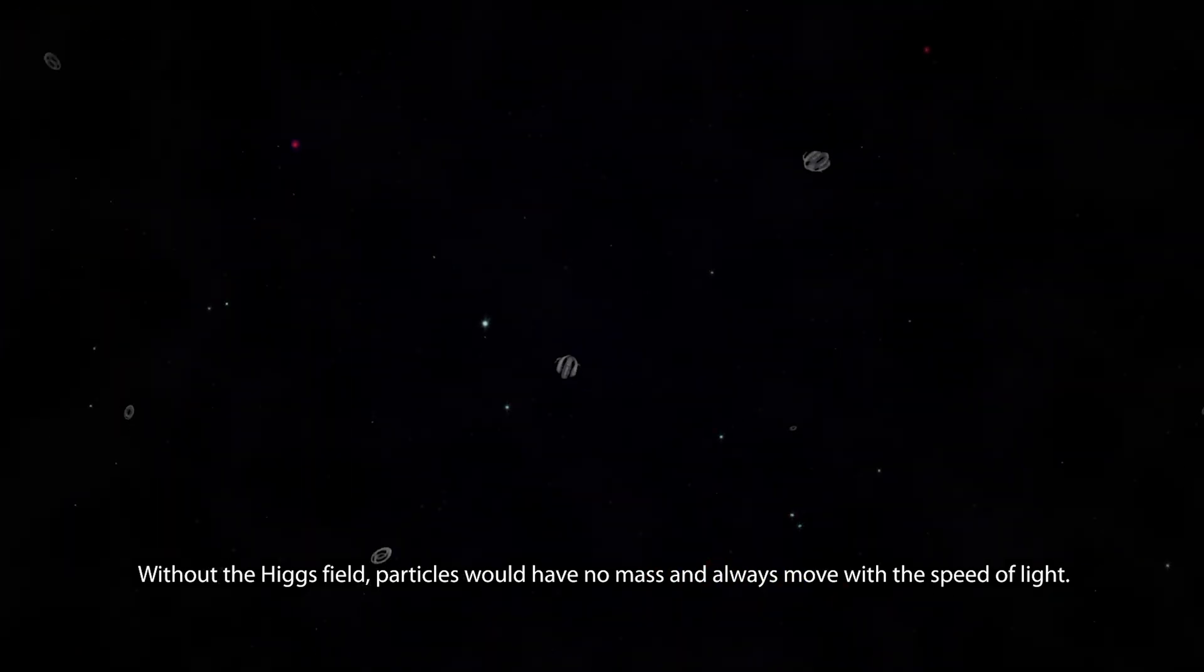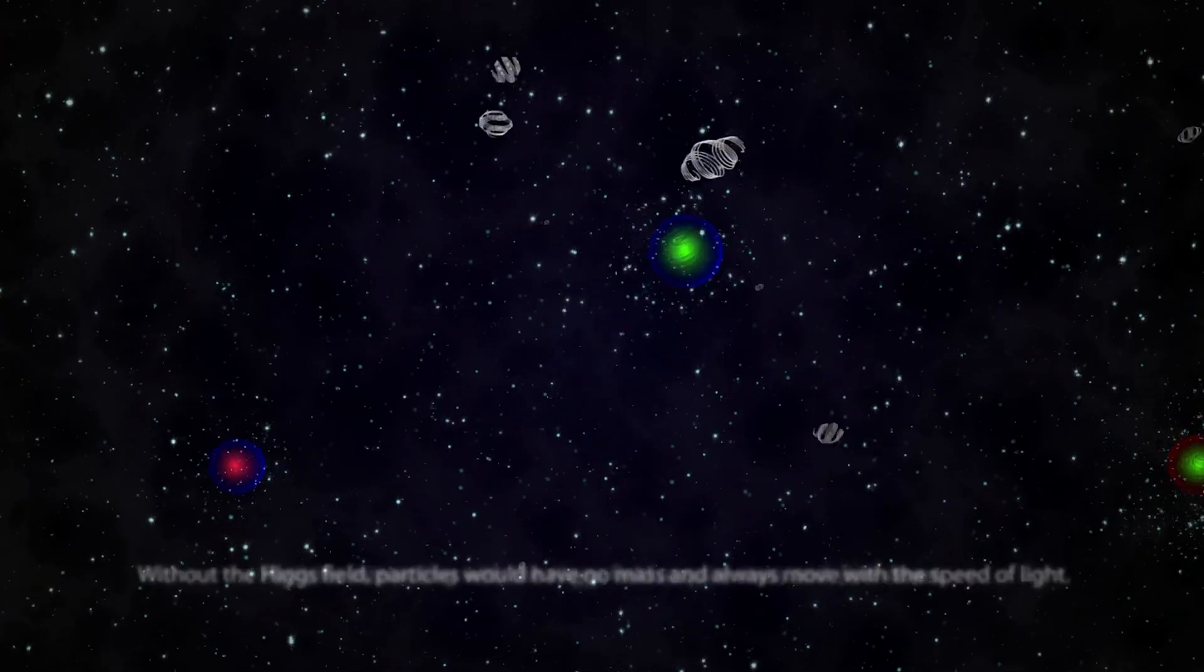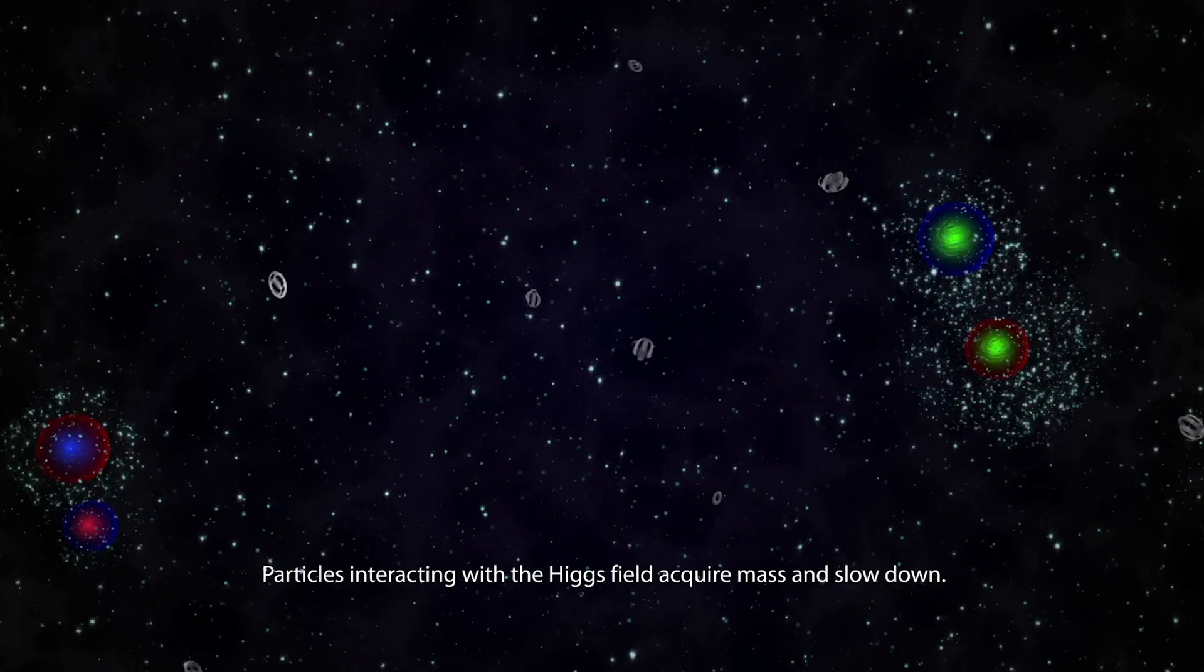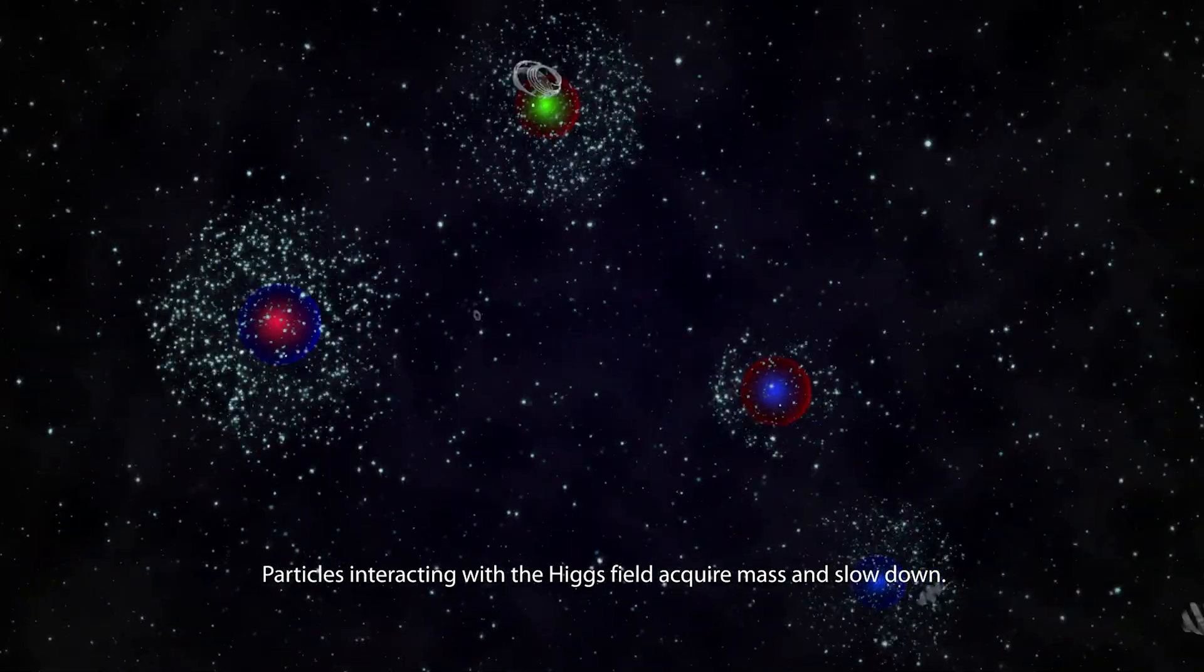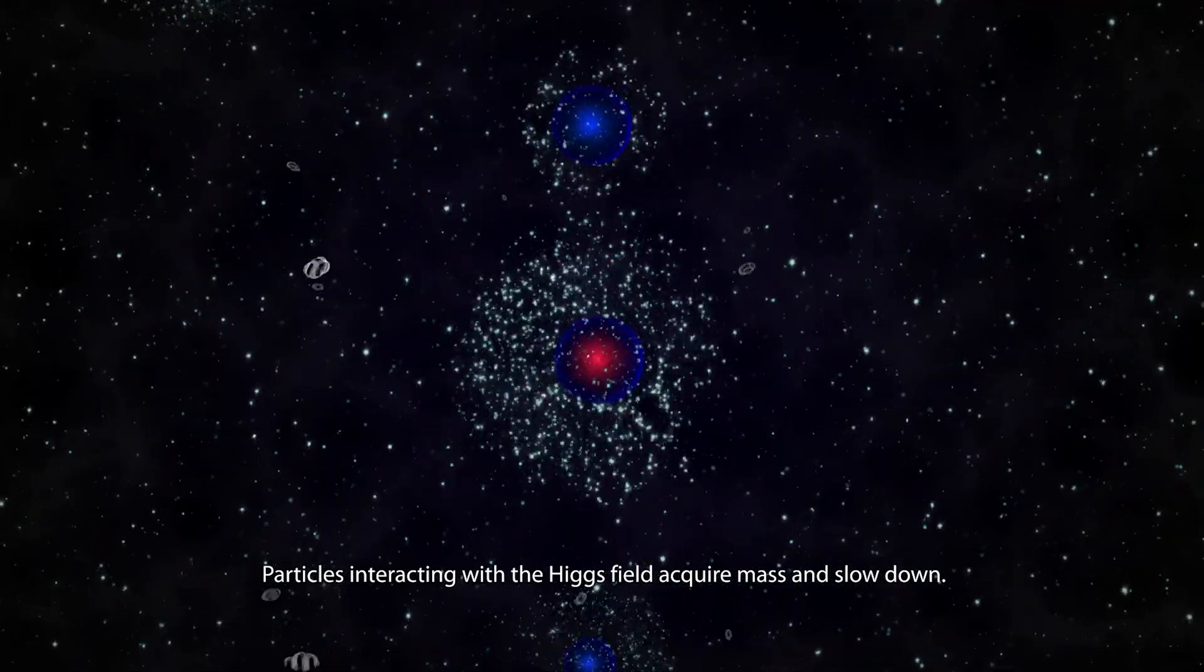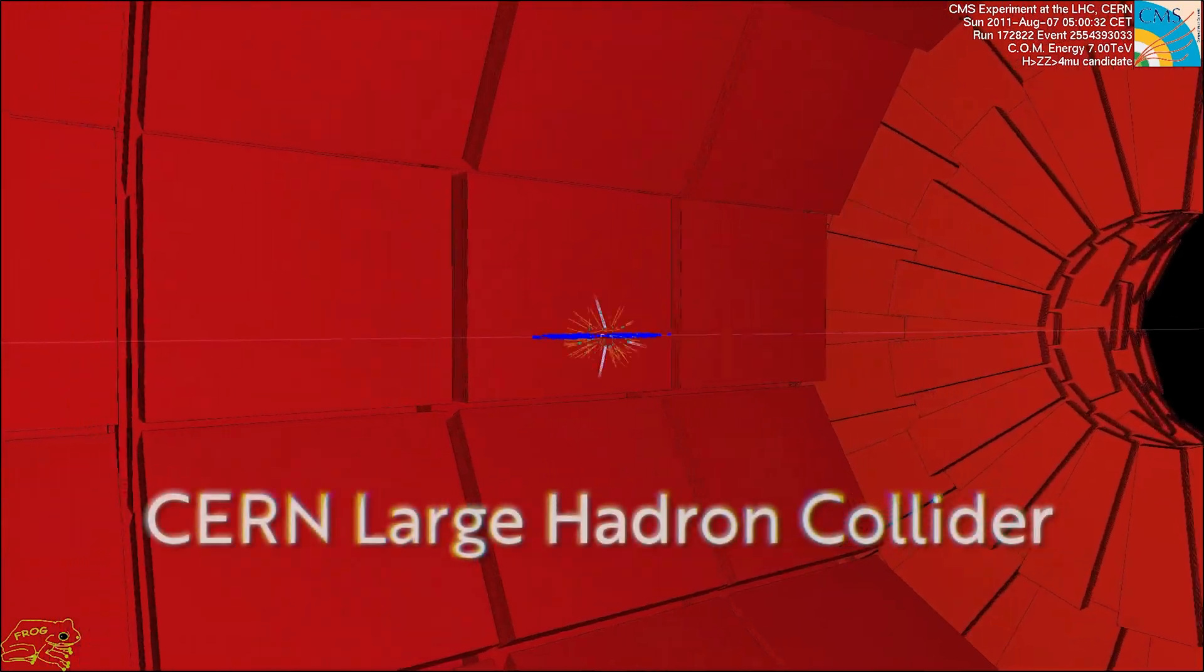The Higgs field is a fundamental field spread throughout the entire universe. We call excitations of the Higgs field the Higgs boson, and in our current model of physics, particles acquire mass by interacting with the Higgs field. Confirming the existence of the Higgs field required detecting the associated particle, which we call the Higgs boson. This was achieved in 2012 at CERN's Large Hadron Collider.